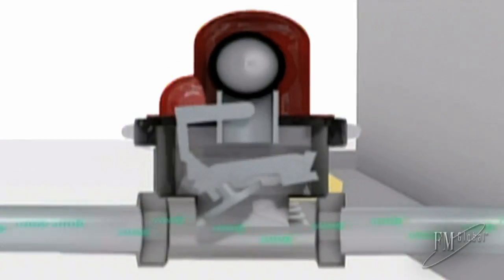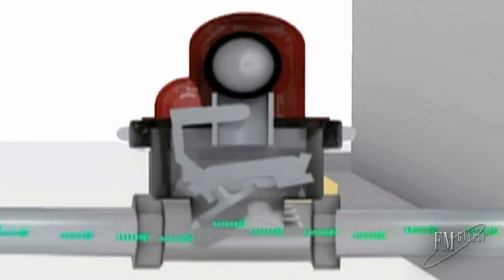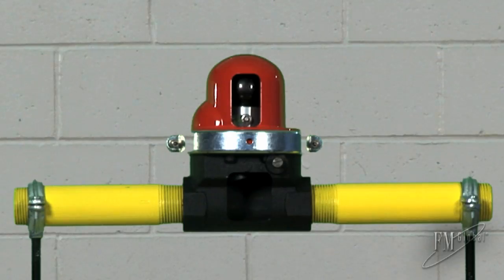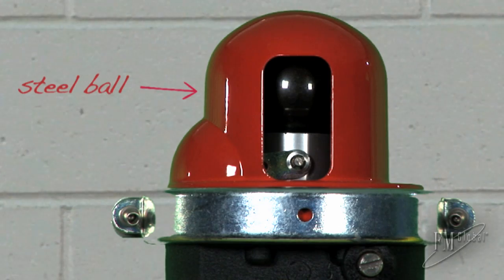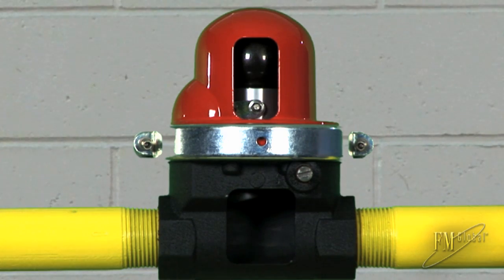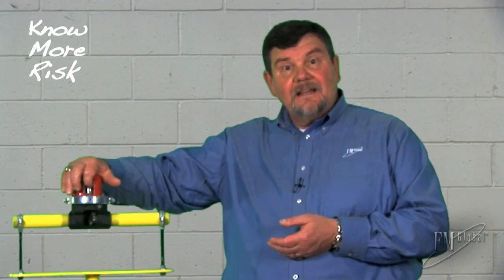In principle, it's pretty simple. The ground shakes, the valve shuts. Let's take a look at the valve I have here today. It's got windows, and we can see inside that there's a steel ball under the red cap sitting on a seat that's holding the valve in the open position. In an earthquake, that ball would be dislodged and the valve would shut. Like that.